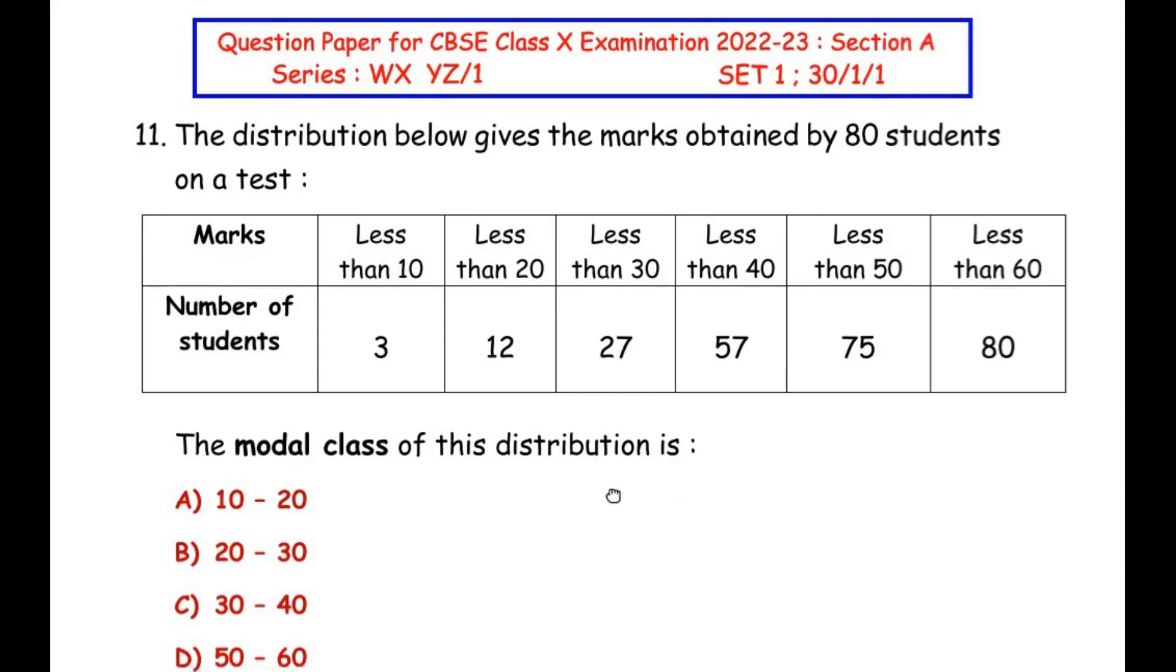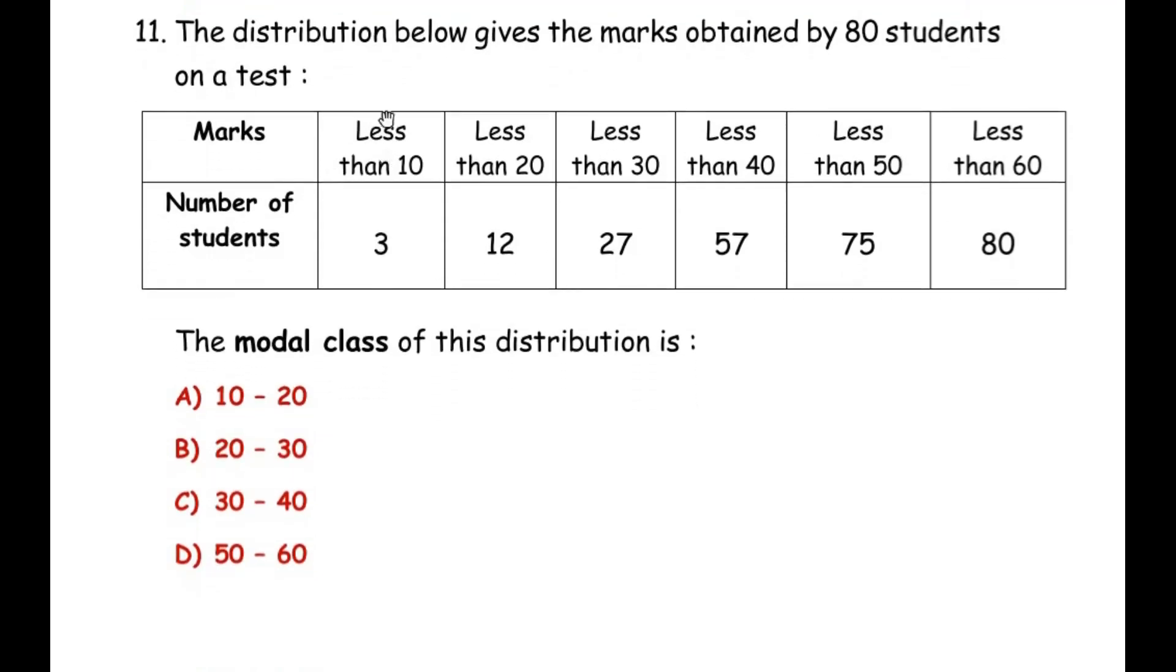So let us try to first understand this question. A table is given in the form of less than type that is less than 10, less than 20 and so on. And if we look at the number of students it is a cumulative frequency that is you can see it's been added up to give you the total number of students at the end. So we have to actually find out the frequency from this cumulative frequency to find out where our modal class stands.